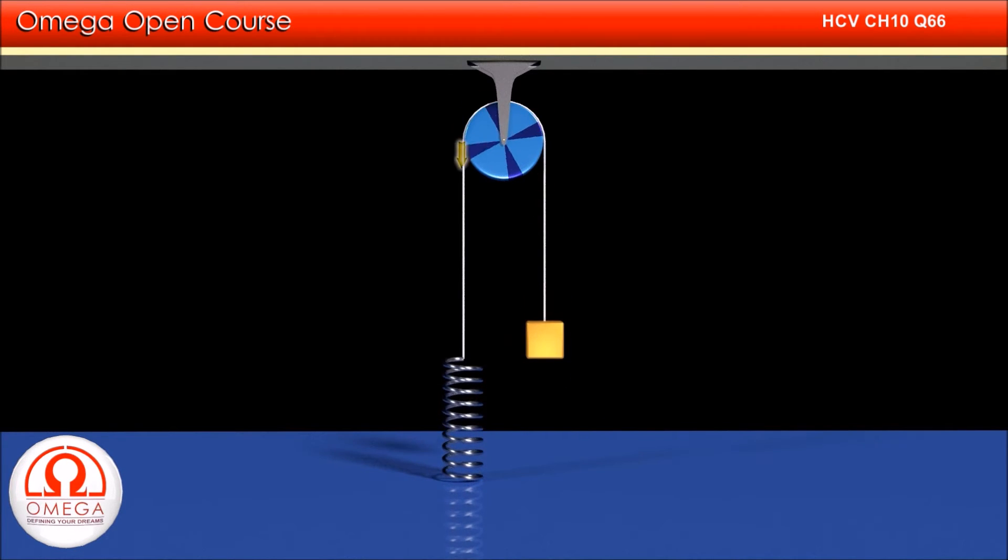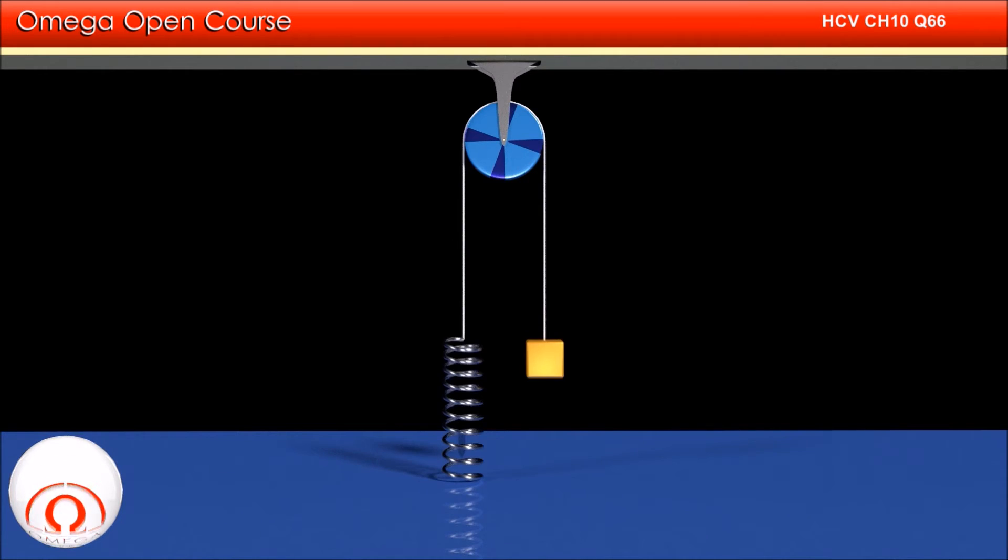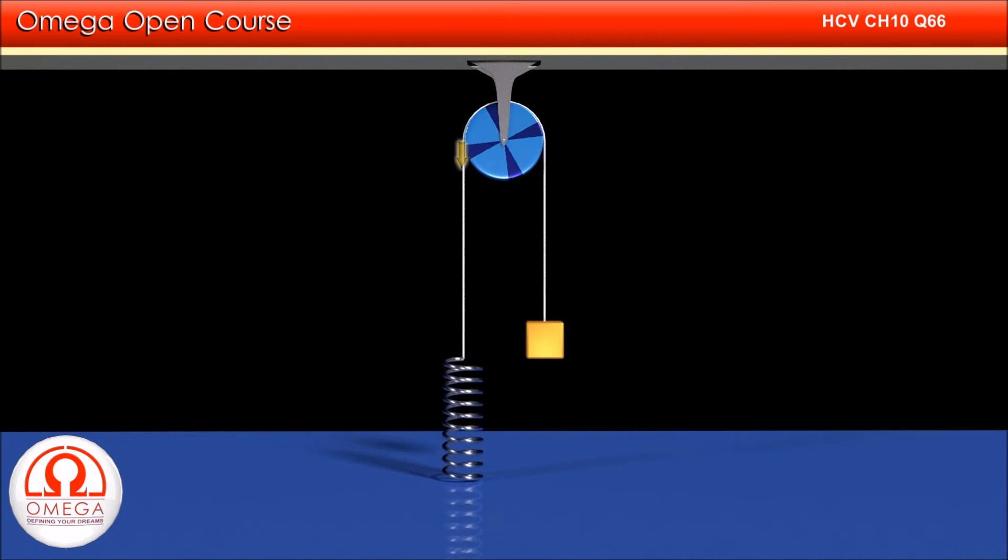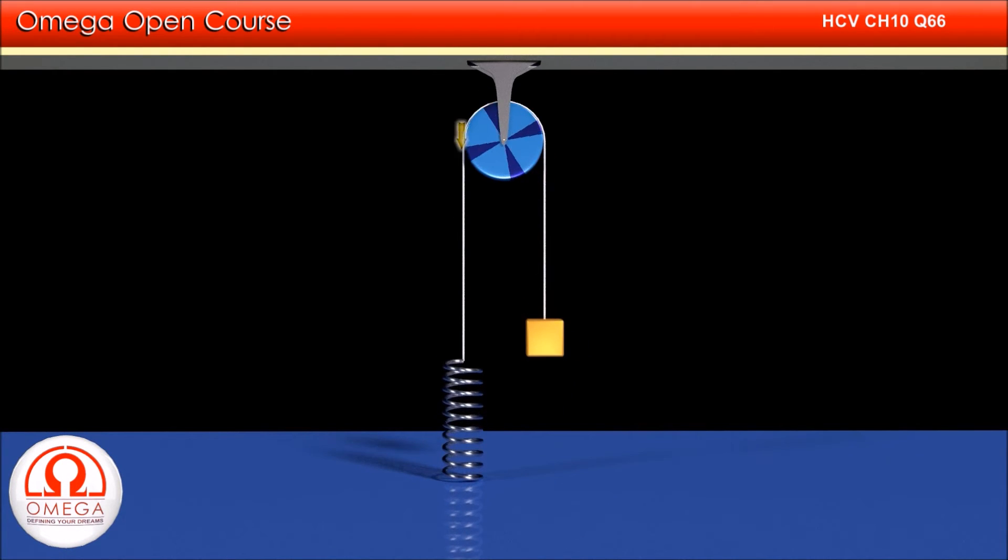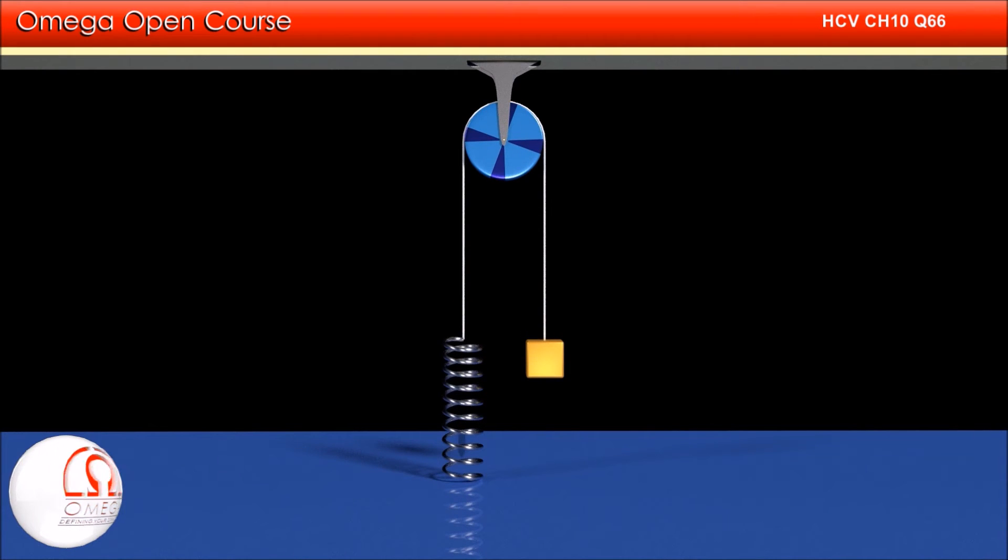When the system is released, gravity pulls the block down and does work in the process. Of this energy provided by gravity, some is taken by the spring which stores it as potential energy. The rest is stored as kinetic energy of the block and the pulley.